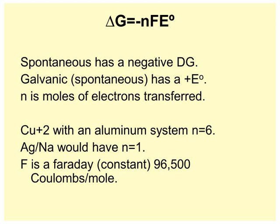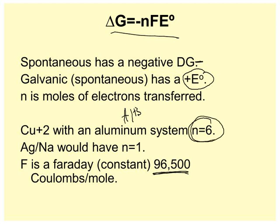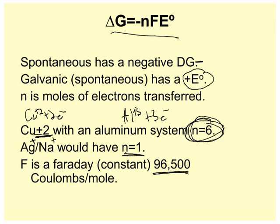Delta G equals negative NFE. Spontaneous reactions have a negative delta G. Remember, if delta G is negative, it's spontaneous. Galvanic spontaneous reactions have a positive E naught. N is the moles of electrons transferred. So it's basically a plug and chug. F, a Faraday, is a constant in coulombs per mole. Copper plus two with aluminum, which by the way would be aluminum plus three, the moles transferred would be six, not two. Copper plus two plus two electrons, aluminum plus three plus three electrons, it's the least common multiple, which would be six. Silver is a plus one guy, sodium is a plus one guy, their N is one. And then you can do the calculations.